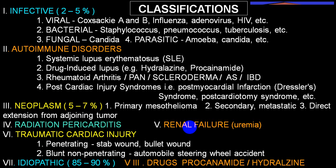Among bacterial causes, staphylococci and pneumococci top the list, followed by tuberculosis. Among viral causes, Coxsackievirus, influenza virus, and HIV are most common. In autoimmune disorders: SLE, drug-induced lupus, RA, polyarteritis nodosa, scleroderma, ankylosing spondylitis, and inflammatory bowel disease. Secondary causes include post-cardiac injury syndromes like post-MI Dressler syndrome and post-cardiotomy syndrome, which can cause injury to the pericardial layer ending with pericardial effusion.